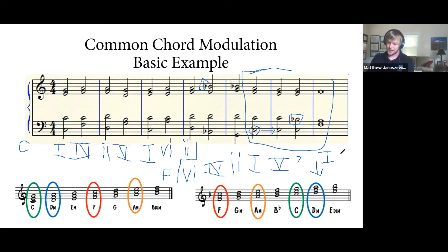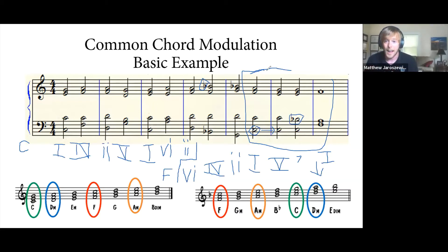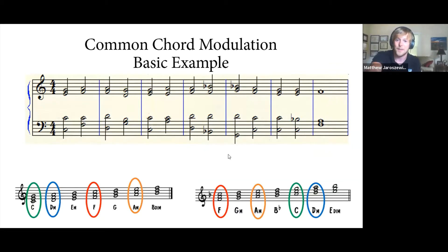A way to know you've modulated: if you see the authentic cadence figure — especially with the one chord in second inversion — in a new key, you've most likely modulated. Work backwards, look a couple of chords back, and find the last common chord before chords that only belong to the new key. That's usually when you can determine the point of modulation.